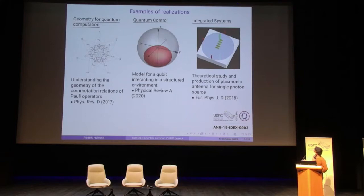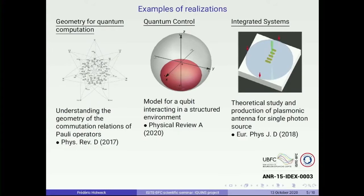The second picture comes from a postdoc project supervised by Bruno Bellomo at Utinam and Dominique Suny at ECB. The idea was to study the interaction of a single qubit with the environment. When you try to do quantum control, you fear the environment may destroy the quantum properties of your system. But their idea was the opposite: how to use the environment to achieve the transformations you want to implement. This is what we call reservoir engineering. The last illustration is a joint project between two departments of ECB, involving theoretical studies on quantum plasmonics up to the production of nano antennas to produce single photon sources.